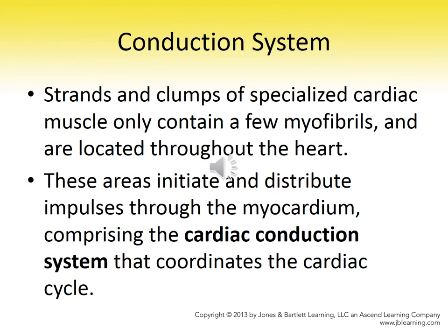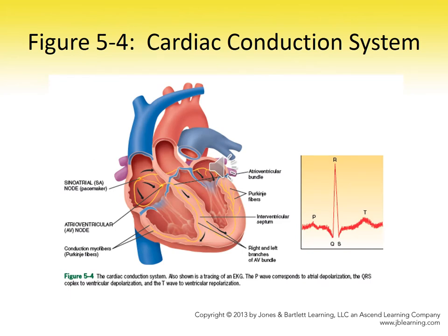Something I find absolutely fascinating is that the heart doesn't just work on sheer mechanics — it has an electrical system that governs its mechanical state. Here we see the conduction system. Up in the right atrium is the sinoatrial node, or SA node. That fires through internodal pathways to the atrioventricular node, or AV node. From there it goes through the bundle of His, which splits into right and left bundle branches, and then flows into the Purkinje fibers, which go into the myocardium — specifically the ventricles — causing ventricular contraction.